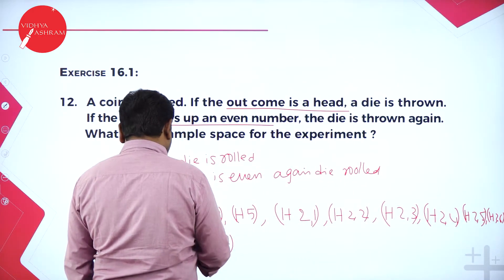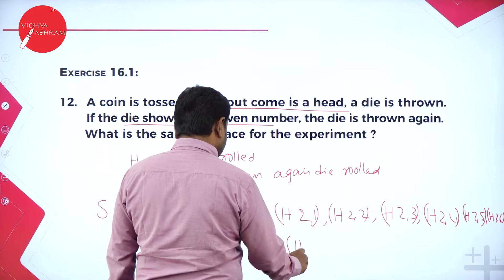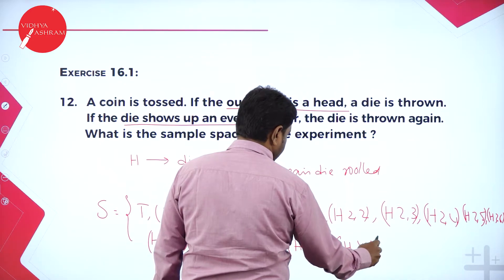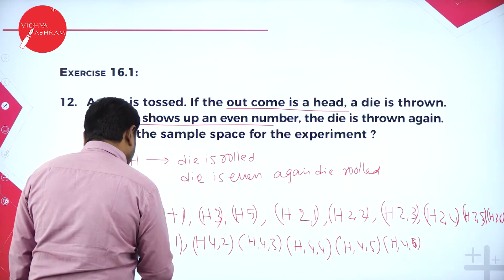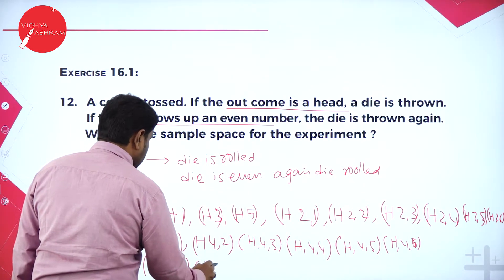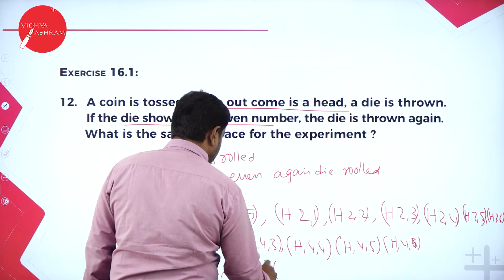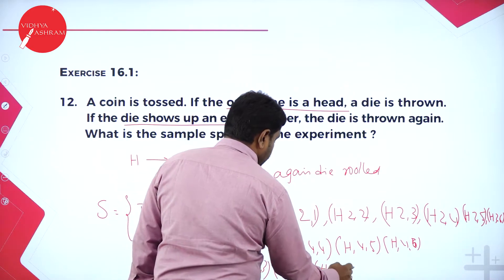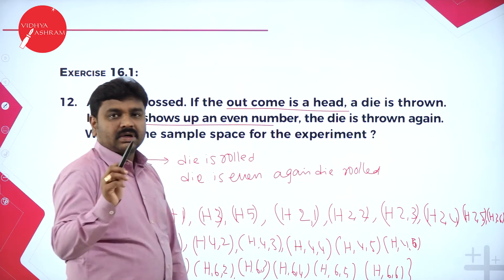Similarly, I roll a die and get H4 — even number, again roll. H4 with outcomes 1 through 6. Second time when you roll a die, you may get any number and you have to note it. When you get another even number like 6, again you should roll: H61, H62, H63, H64, H65, H66. These are the possibilities.